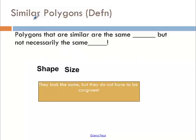So polygons that are similar, and we're going to use the word similar a lot, that's going to take the place of congruent like it did in earlier chapters. Polygons that are similar have the same shape but are not necessarily the same size. They look the same but they do not have to be congruent. Congruent shapes are technically similar as well but you can have different sized shapes as long as they have the same actual physical structure.